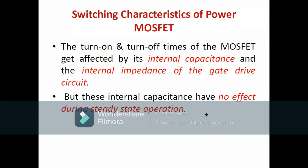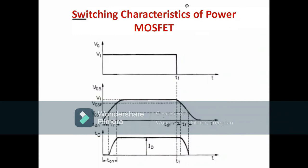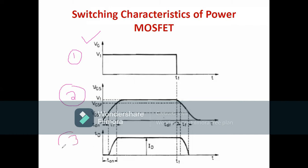Let us explain the switching characteristics of the standard power MOSFET. The MOSFET is a controlled device, so you have to provide the gating pulse. You can see the first waveform — gating voltage versus time. We need to provide the definitive gate voltage; without gate voltage or gating pulse, a MOSFET can never be turned on. The second characteristic is the gate-source voltage (Vgs) versus time, and the third one represents the drain current — the current passing from drain terminal to source terminal.